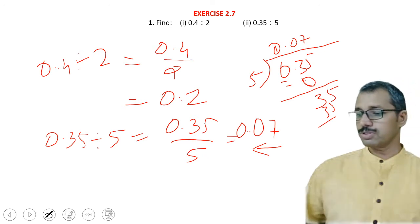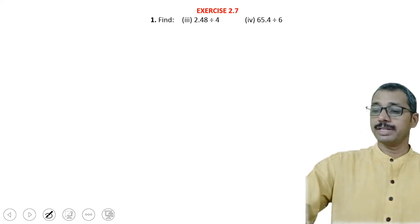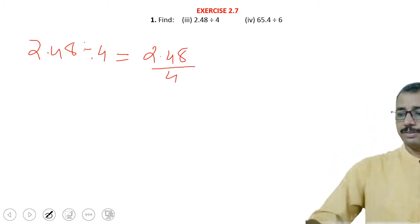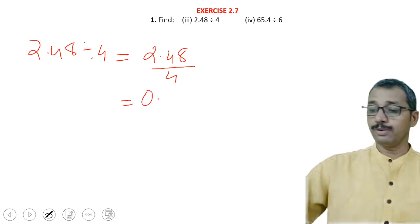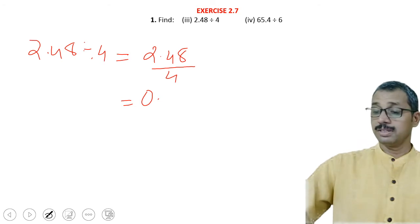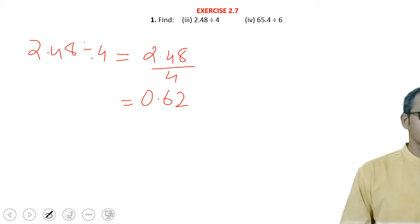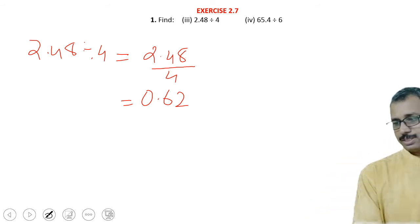The next example is 2.48 divided by 4, which equals 2.48 upon 4. While dividing: in 2, 4 will not go, so 0. In 24, 4 sixes are 24, so 6. Then in 8, 4 twos are 8, so 2. The answer is 0.62.